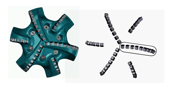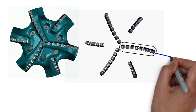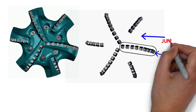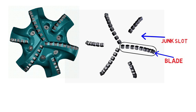In order for a PDC bit to function reliably, the cutting structure has to remain intact. For this reason, the cutters are usually aligned into rows, allowing the cutting structure to be held together by large blades. The blades also define the passageways for the drilling fluid known as junk slots.